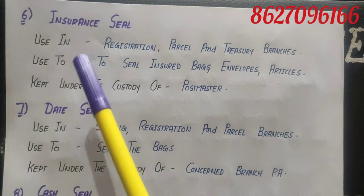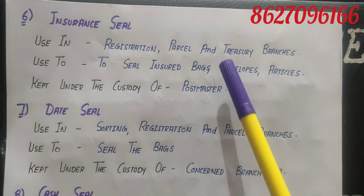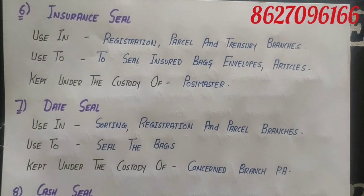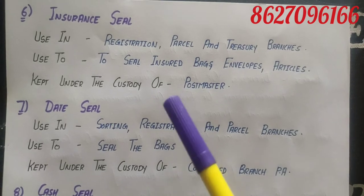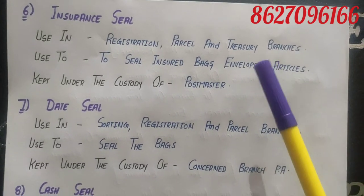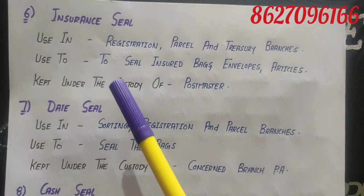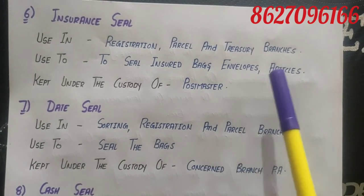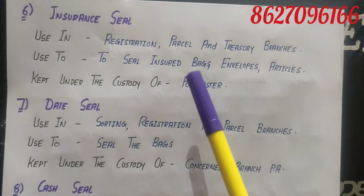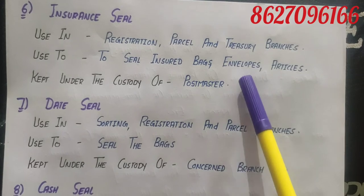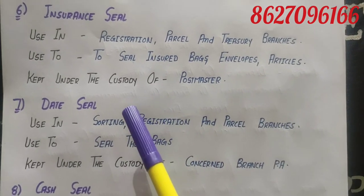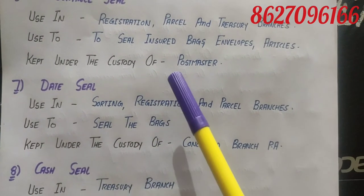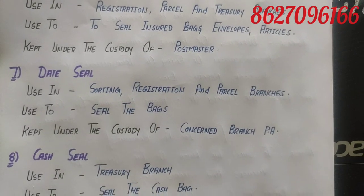Then we have the insurance seal, used in registration, parcel and treasury branches. It is used to seal insured bags, welpies and articles — those insured articles and bags. It is kept under the custody of the Postmaster.